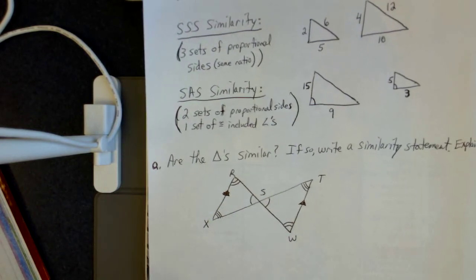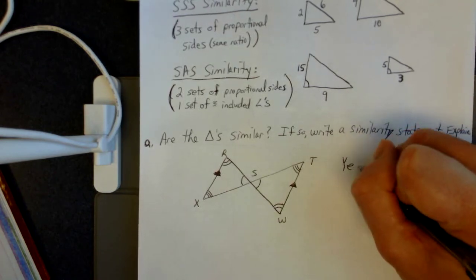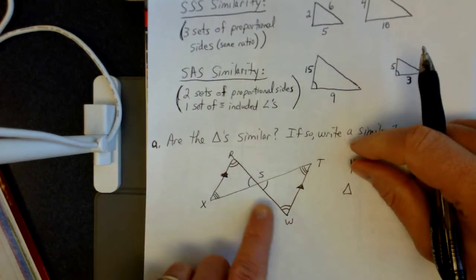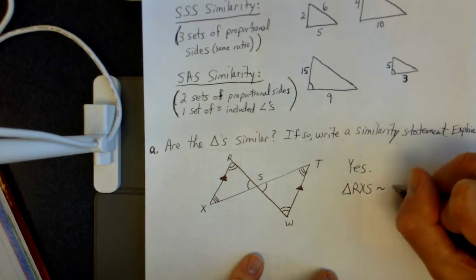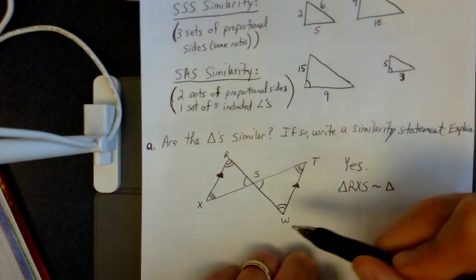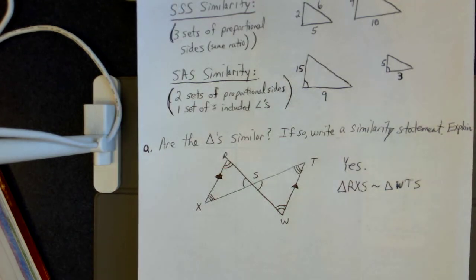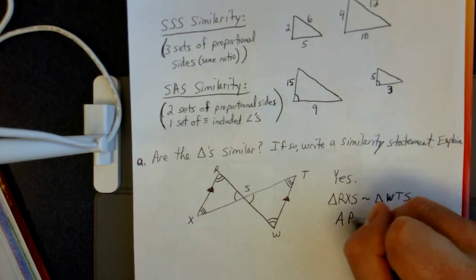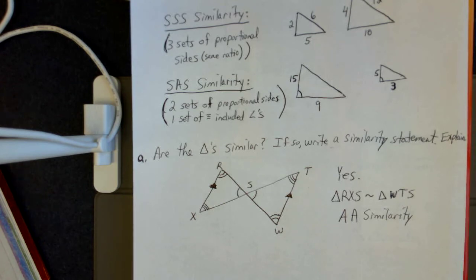What I end up with is three sets of congruent angles, but I only need two to use the AA theorem. So yes, these two triangles are similar to each other. For the similarity statement, I'll call the left triangle RXS and put the similarity symbol in between. RXS goes from two to three to one angle marks, so over on the right I have to go two to three to one — that's WTS. Similarity statement: triangle RXS is similar to triangle WTS. The explanation is simply AA similarity.